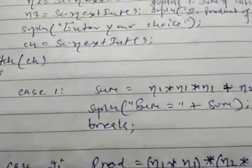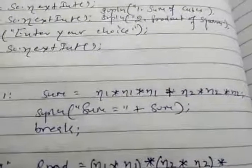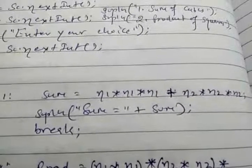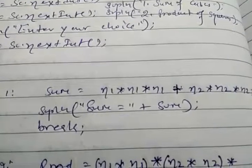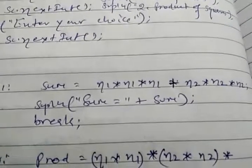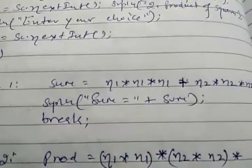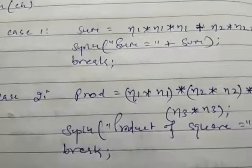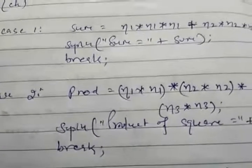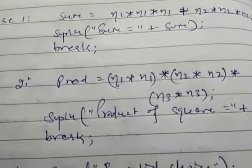In case 1, sum of cubes of the first and second number: sum = n1*n1*n1 + n2*n2*n2, and we print the sum. In case 2, product of squares: product = n1*n1 * n2*n2 * n3*n3, and we print product of squares equal to product.